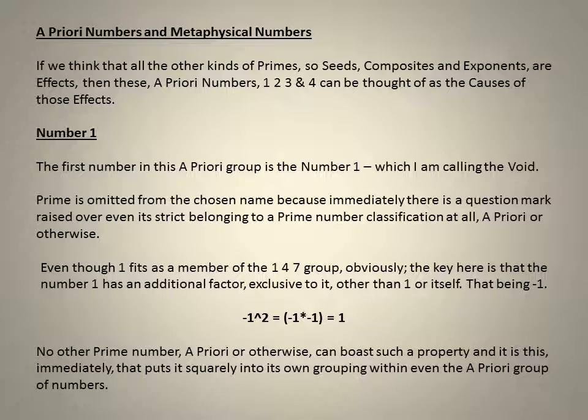Number 1. The first number in this a priori group is the number 1 which I am calling the void. Prime is omitted from the chosen name because immediately there is a question mark raised over even its strict belonging to a prime number classification at all. Even though 1 fits as a member of the 147 group obviously, the key here is that the number 1 has an additional factor exclusive to it other than 1 or itself, that being minus 1.